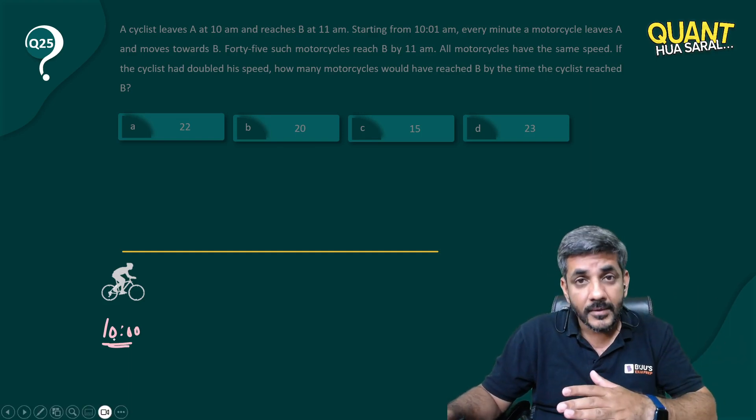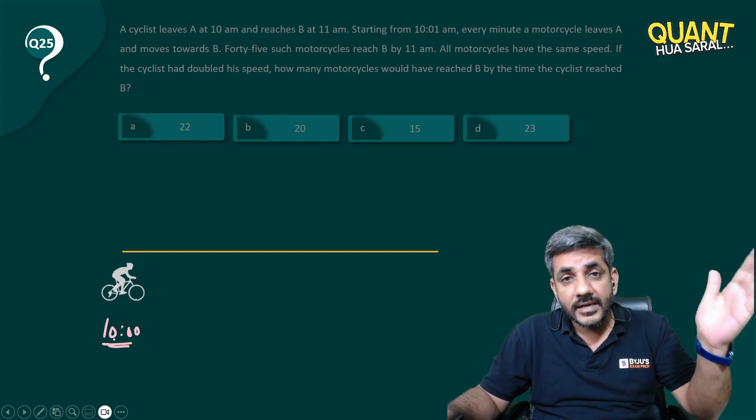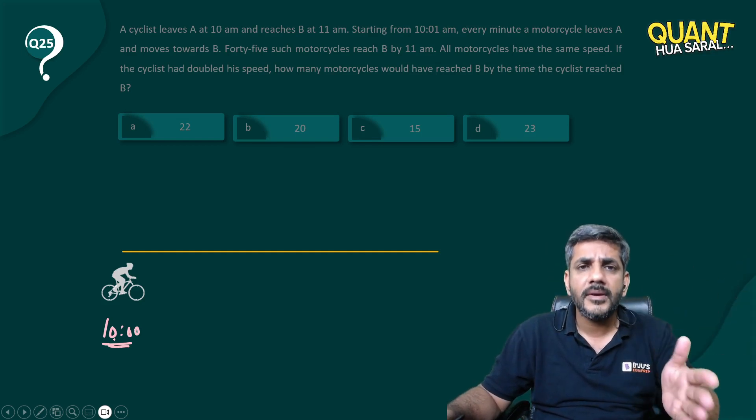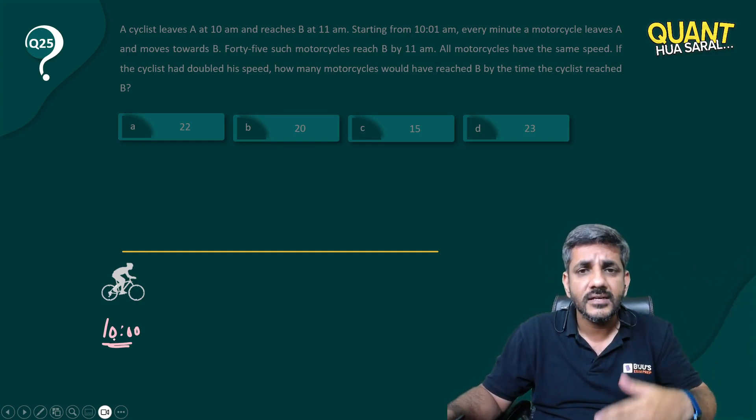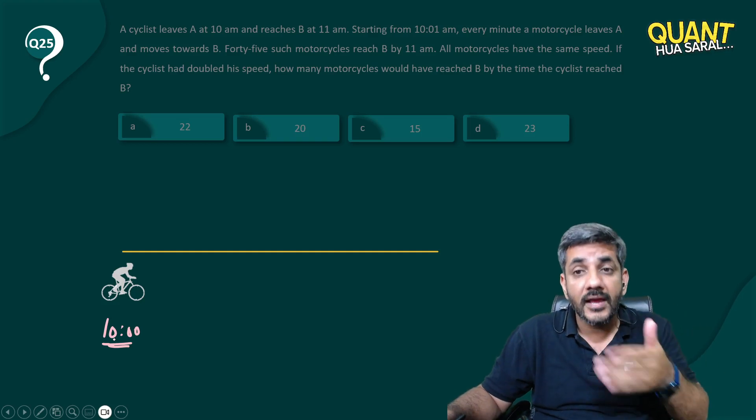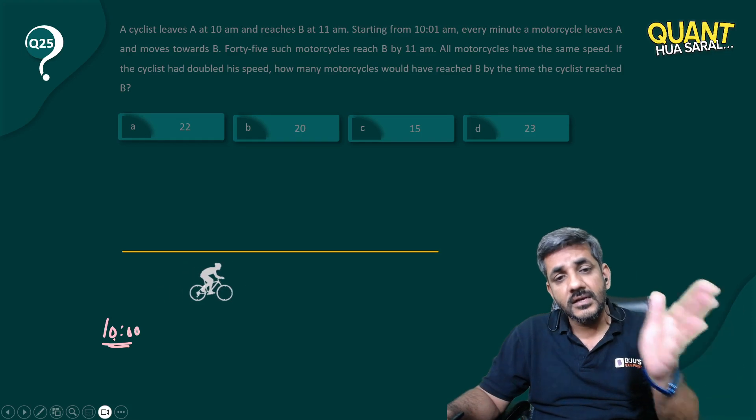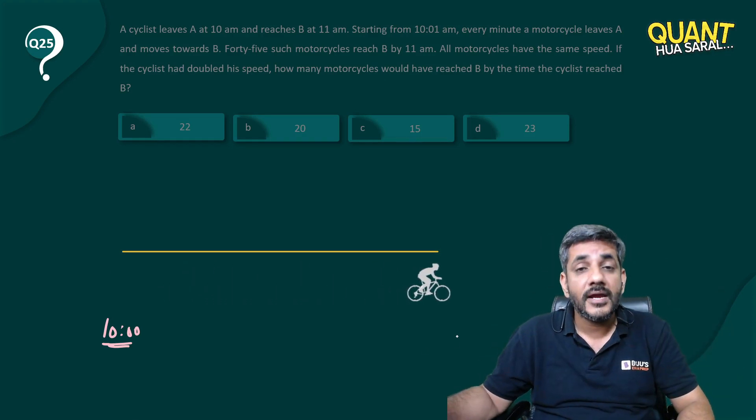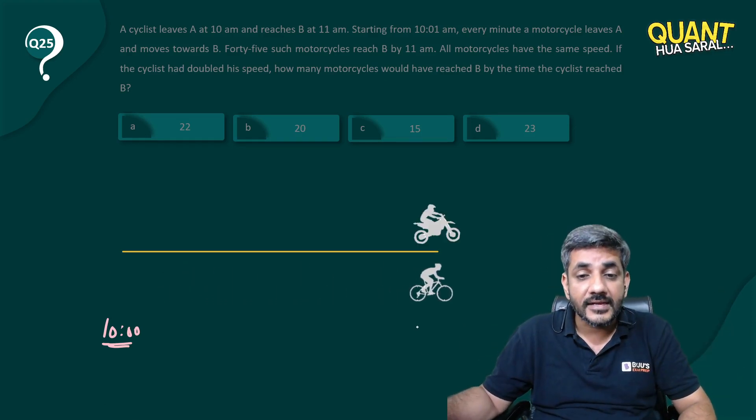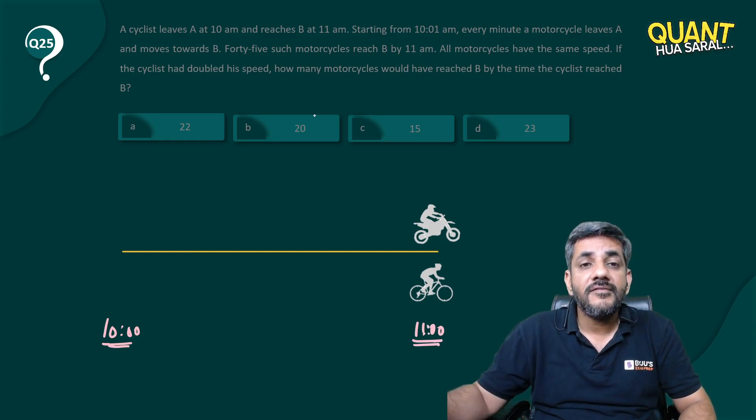And now he goes to the other end where he actually is crossing, he's being crossed by many motorcyclists as the question says that starting from 10:01 every minute a motorcyclist is leaving. So now this person leaves the other end at what time? He reaches there at exactly 11 o'clock, right? And at this 11 o'clock he met the 45th cyclist.